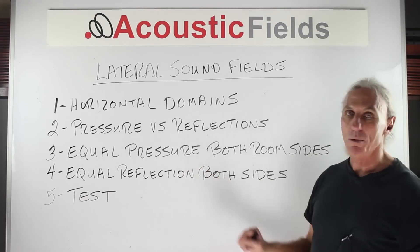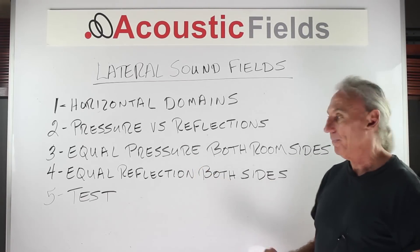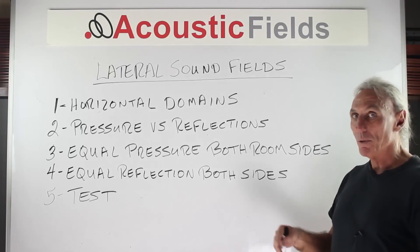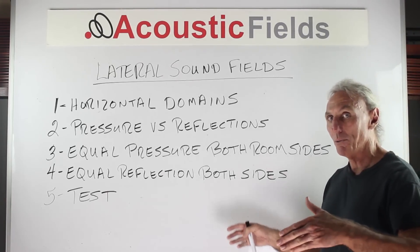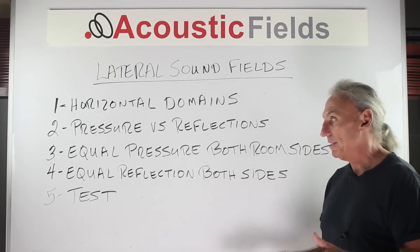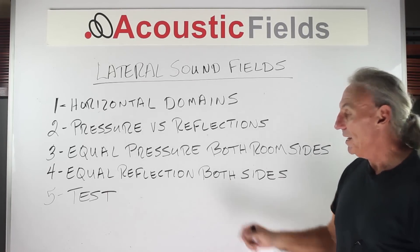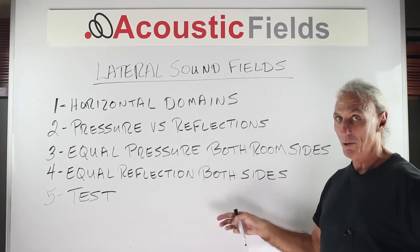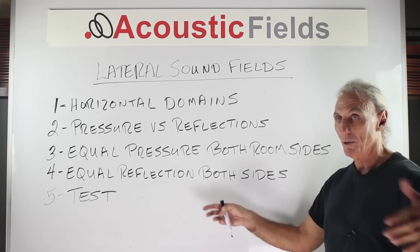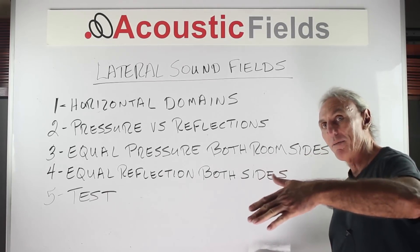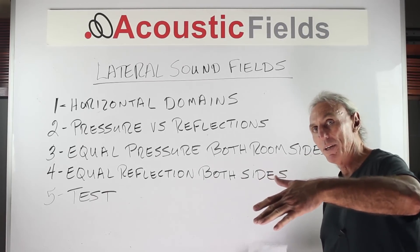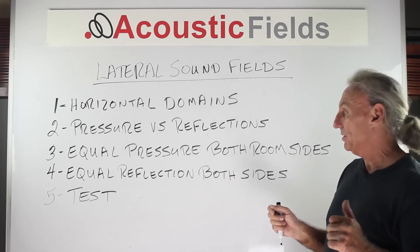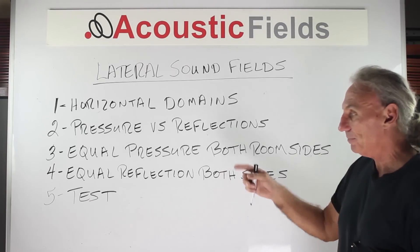We want equal pressure, and we want equal pressure on both room sides. We want equal reflections on both room sides. We don't want one side having more pressure than the other, and we don't want one side having more reflections than the other.